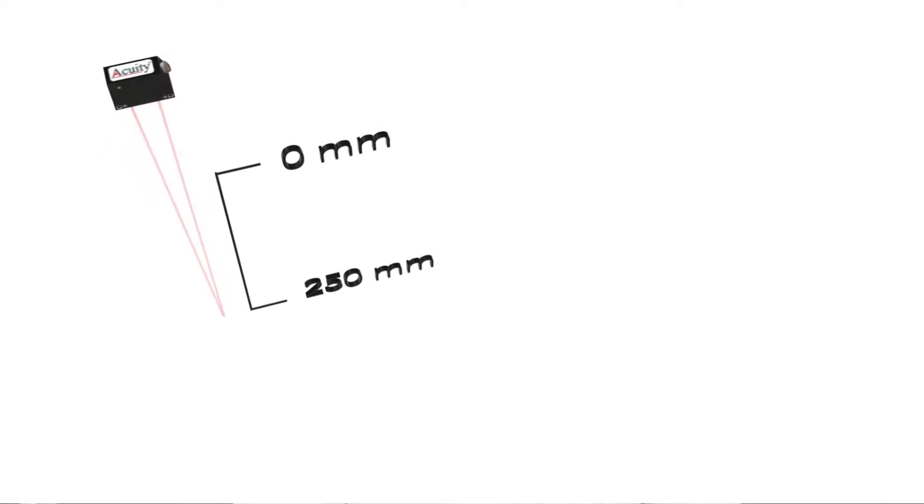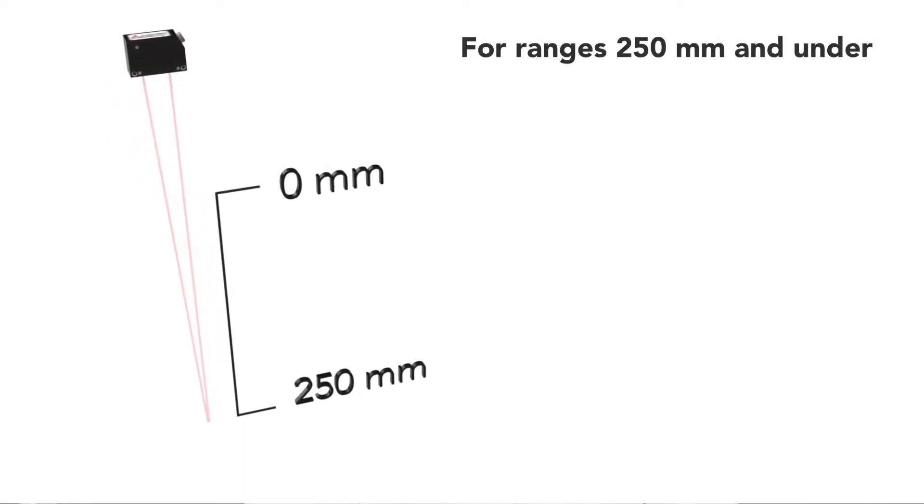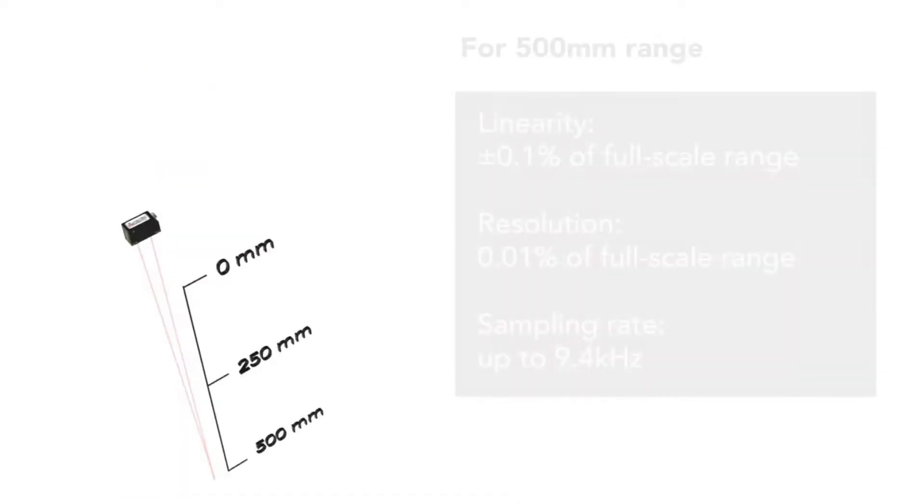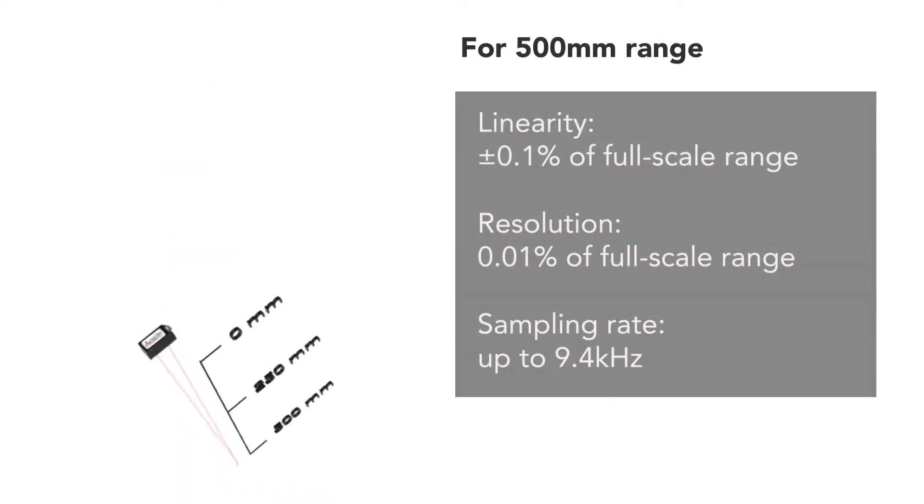Even with such small dimensions, the AR100 is available with measurement ranges up to a half meter, all while maintaining a 0.05 percent linearity for ranges 250 millimeters and under, and 0.1 percent linearity for the 500 millimeter range. You won't have to trade accuracy for a laser that can fit in a tight space.